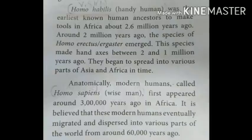Anatomically modern humans called Homo Sapiens, meaning wise men, first appeared around 3 lakh years ago in Africa. It is believed that these modern humans finally migrated and dispersed into various parts of the world around 60,000 years ago.